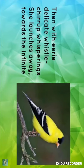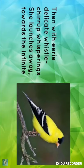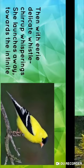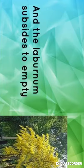Then with an eerie delicate whistle — eerie here refers to strange and mysterious. बहुत soft, delicate whistle बजाते हुए, chirps के साथ, slow voices के साथ — she launches away. वो launch — fly — कर जाती है. She flies away towards the infinite — infinite in the poem refers to sky. Sky की तरफ बढ़ जाती है. And the laburnum subsides to empty — laburnum tree फिर से subsides, returns to emptiness. कोई chirpings नहीं, कोई शोर नहीं, फिर दुबारा silent. Goldfinch के आने से रौनक बिखर गई थी, लेकिन उसके जाते ही पेड़ दुबारा silent हो गया.